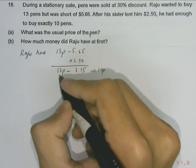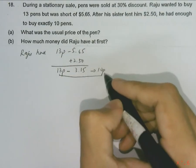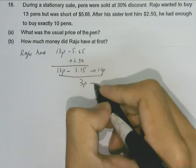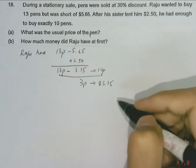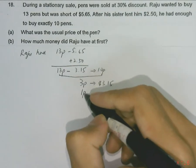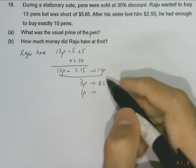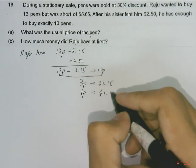So we can find the difference between 13 pens and 10 pens, which is 3 pens. So 3 pens cost $3.15. Then we can find 1 pen by dividing $3.15 by 3, and we will find that 1 pen costs $1.05.